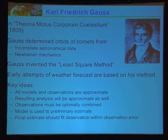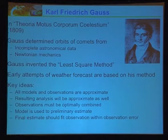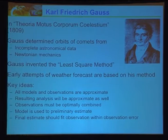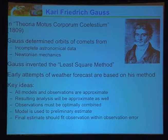Early attempts at weather forecasting are based on these methods. The key ideas are: all models and observations are approximate. You have an approximate model, and even if your model is approximate, you're approximating the solution through a numerical method. Observations are also approximate due to measurement error and interpretation error. So you have uncertainties in both information sources. The resulting analysis will also be only an approximation, but you want to improve that approximation as much as possible.